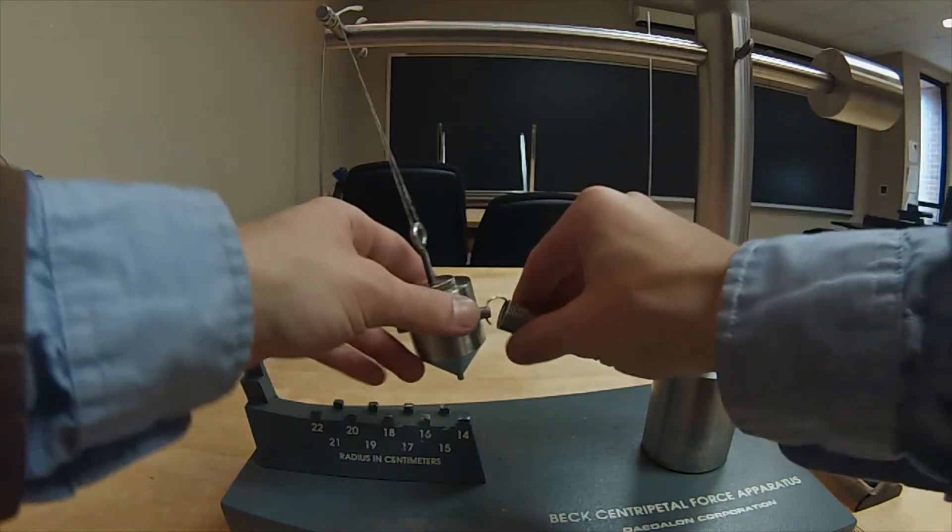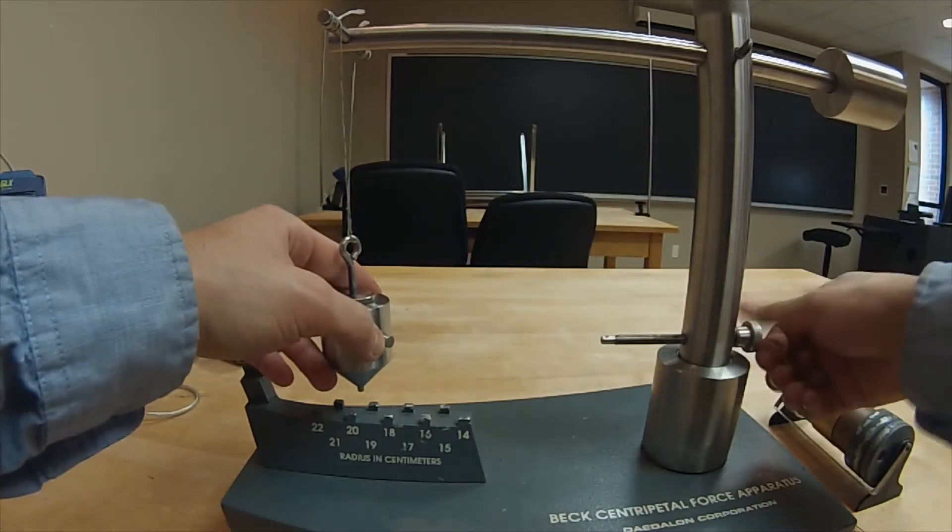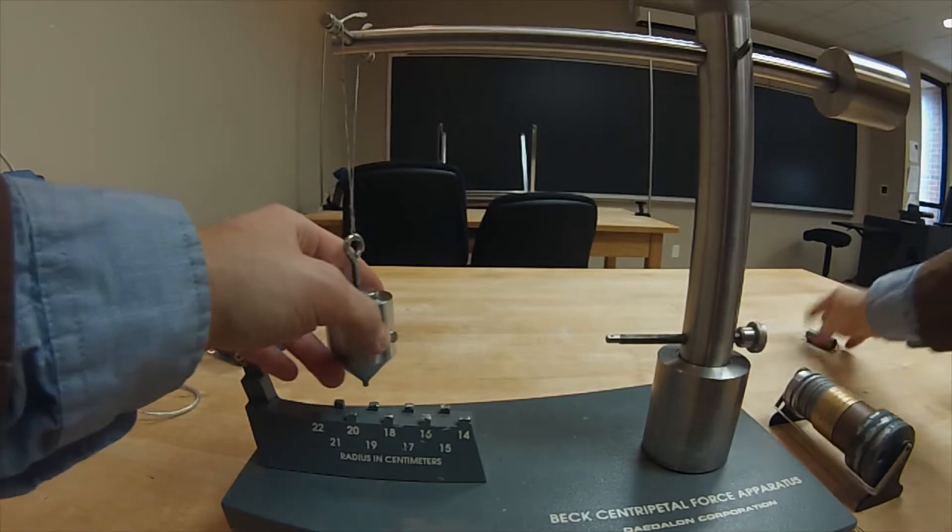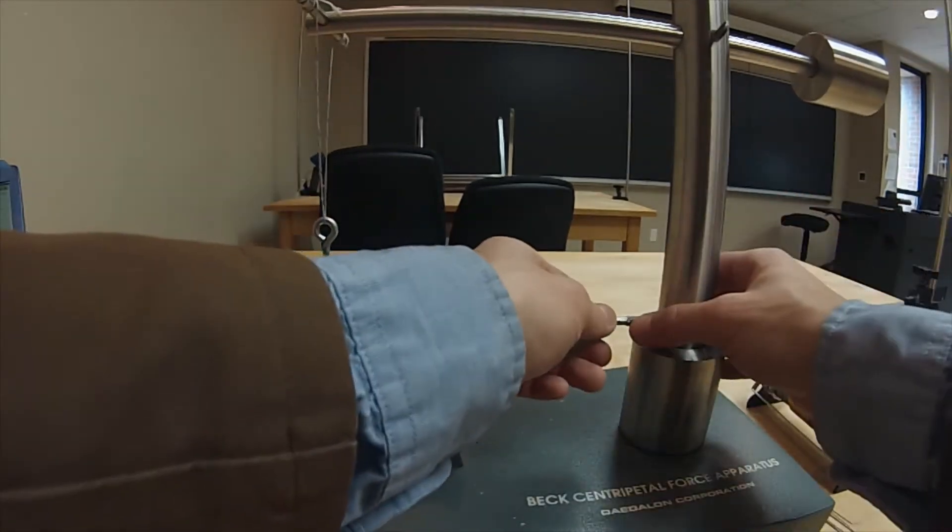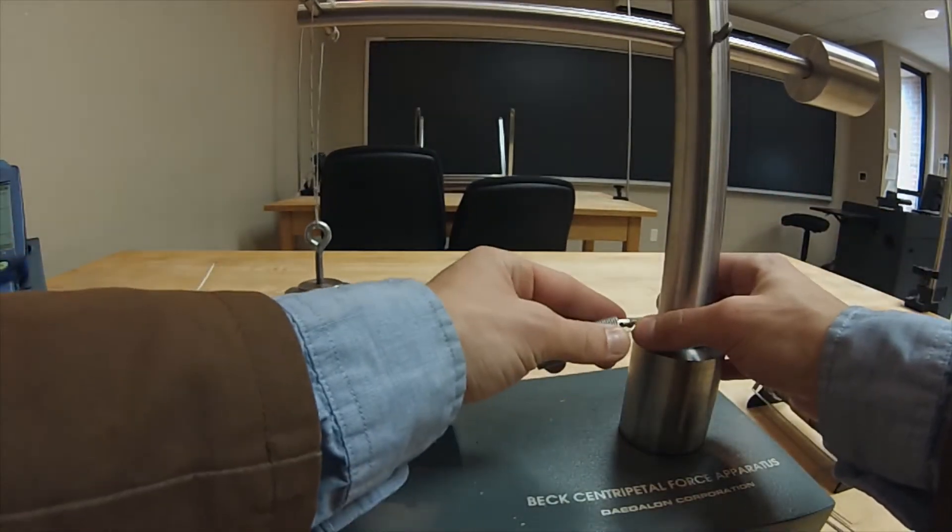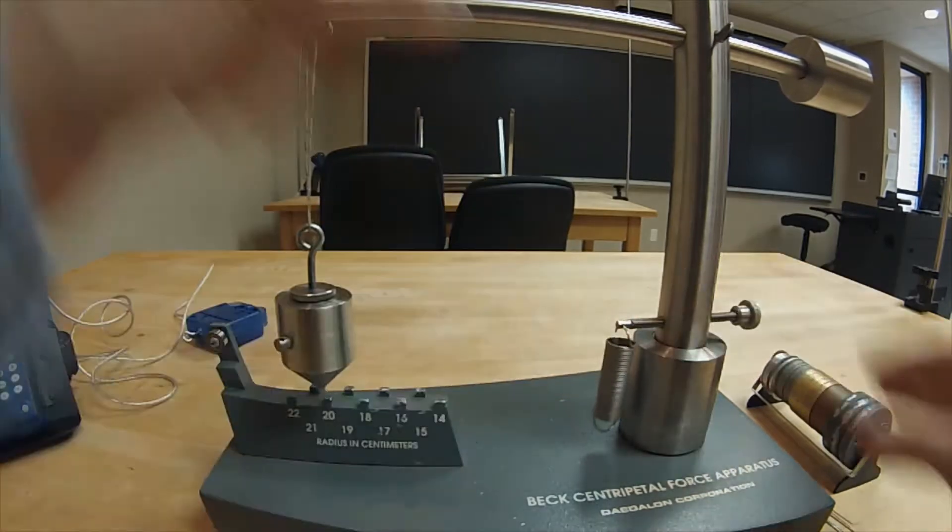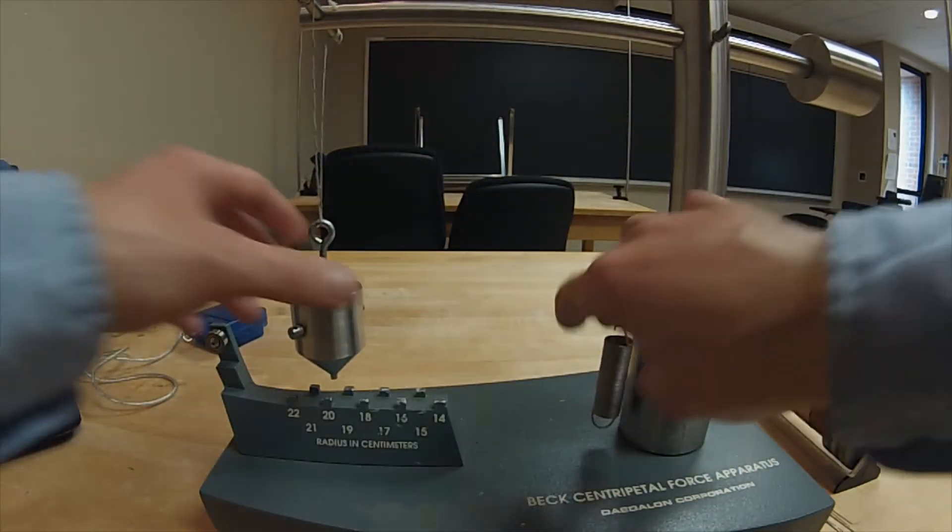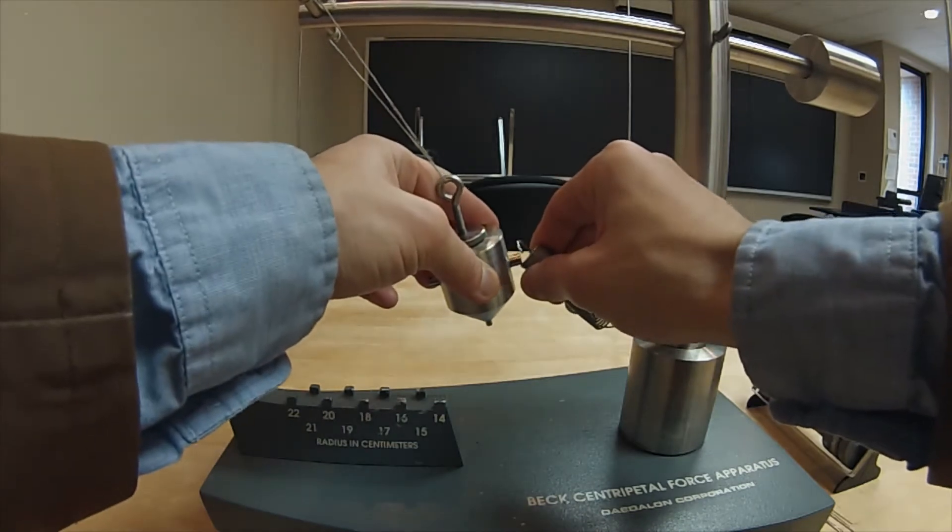If the spring does not deflect the bob from the vertical, then detach the spring from the bob and adjust the threaded spring holder until the spring is able to pull the bob away from the previously chosen mark and towards the center of the centripetal force apparatus. But do not go overboard.